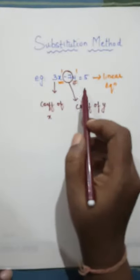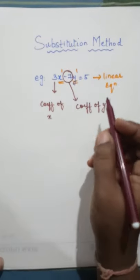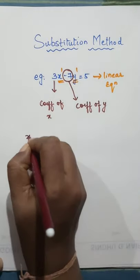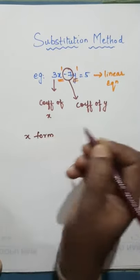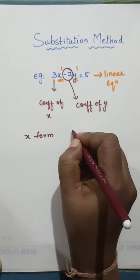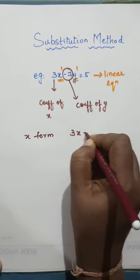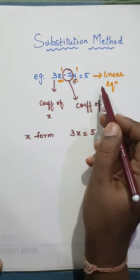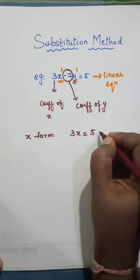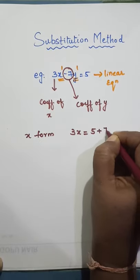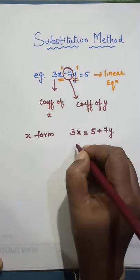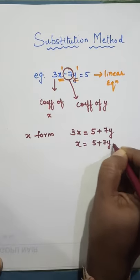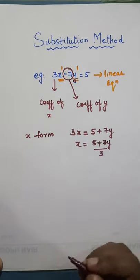Now let me show you how to express this equation in x form or y form. To express in x form, I will keep 3x in LHS and take minus 7y to RHS. So when I take minus 7y to RHS, it will become plus 7y. So x equal to 5 plus 7y upon 3. This is your x form.